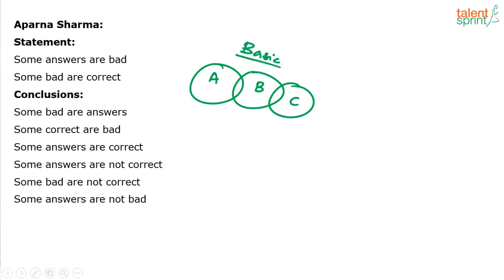Some answers are bad, some bad are correct. You know what the basic diagram is — the one which involves minimum encroachment, minimum overlapping. So, some answers are bad, some bad are correct.